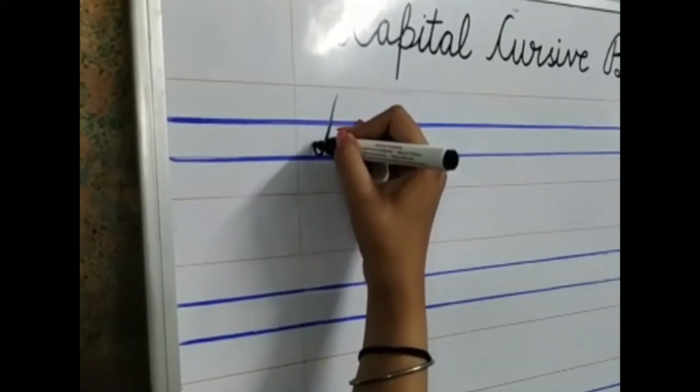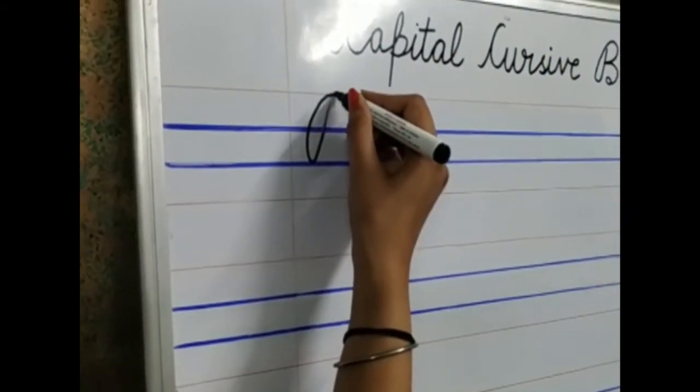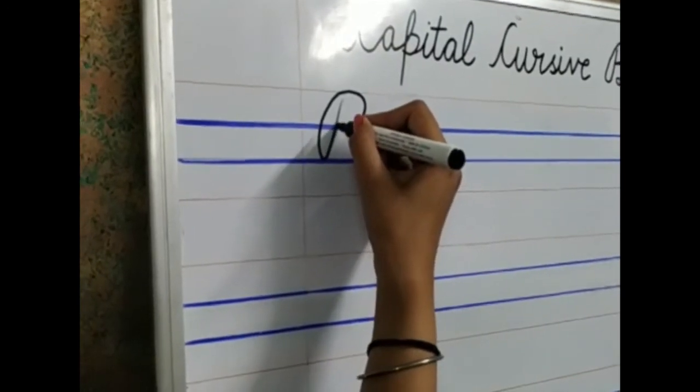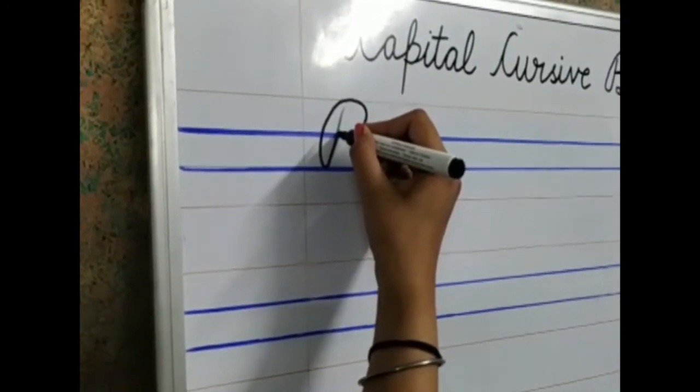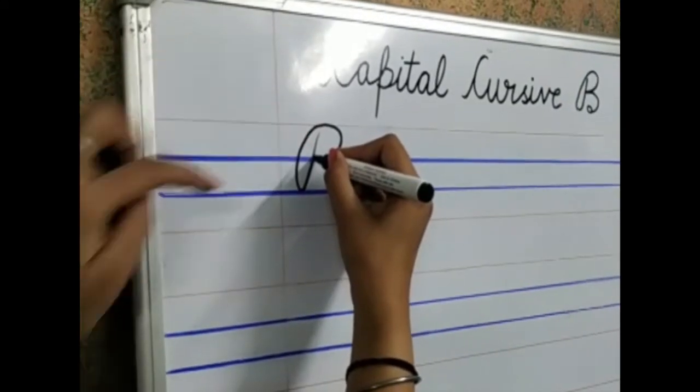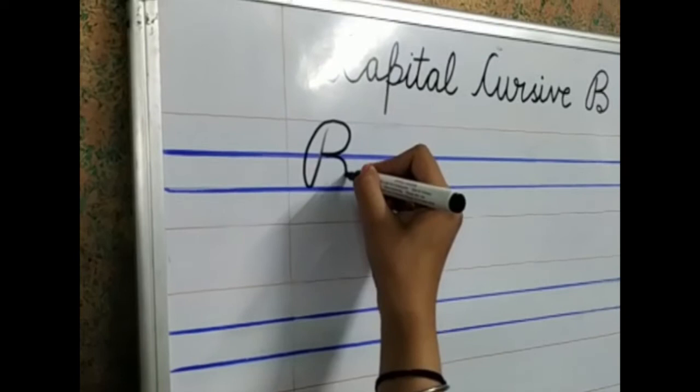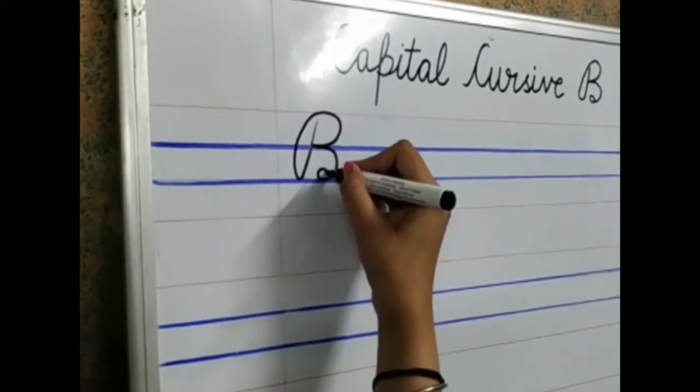Make a loop. Touch the red line. Make a half circle. Okay. This half circle will touch this loop. Again, make another half circle. And make a small circle.